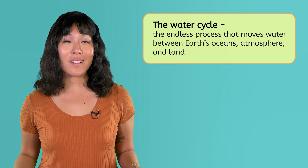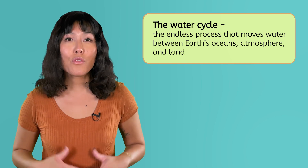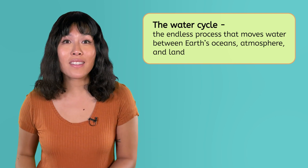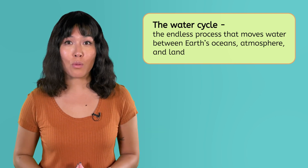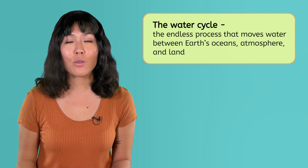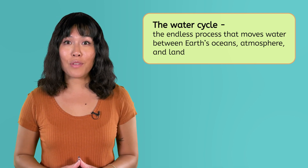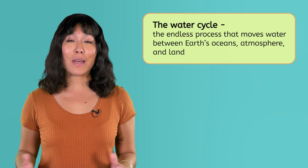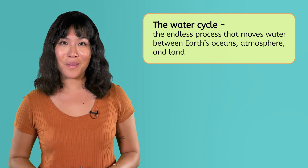The water cycle is the endless process that moves water between Earth's oceans, atmosphere, and land. It's responsible for rain, for flowing rivers, and every other place water is found on our planet. Let's break down the steps that make up this dynamic cycle.